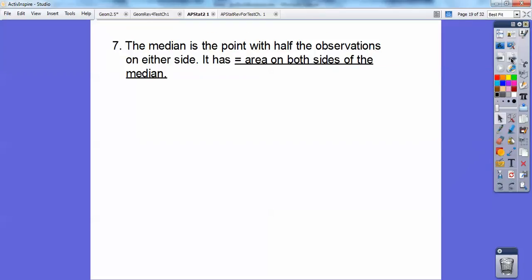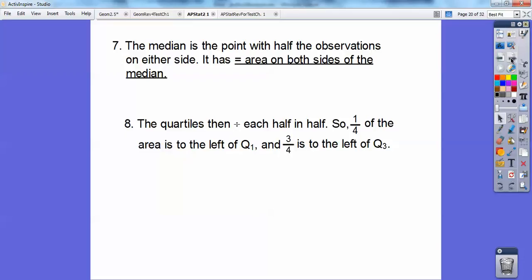The median is the point that has half the observations on either side, so it has to have equal area on both sides of the median. All right, so quartiles divide each half into half. So a quarter of the area is to the left, 25% is to the left of quartile 1, and 75% is to the left of quartile 3, or 25% is to the right of quartile 3.